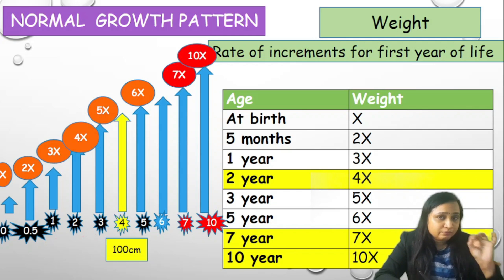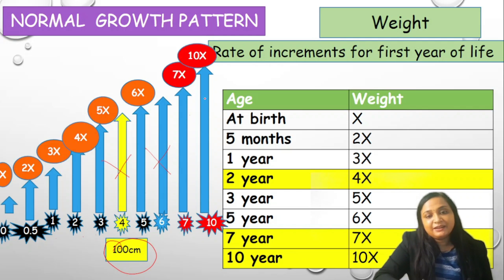At birth it is x, at 0.5 to 0.6 months it is 1x, at 1 year it is 3x, at 2 years it is 4x, at 3 years it is 5x. Do not remember anything at 4 because 4 is an important milestone for the height of 100 cm. 5 year it is 6x, skip again 6, 7 year 7x, 10 year 10x.